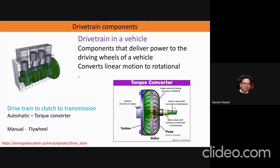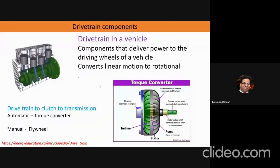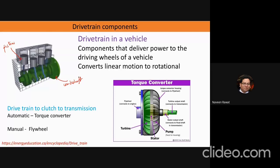There is something called a drivetrain in a vehicle, and essentially these are components that are delivering power to your driving vehicle. You can see here your pistons, and what is happening is you have something called a crankshaft. These pistons are moving and they are connected to this crankshaft, which is a component that is basically converting the linear motion of these pistons into rotational motion.